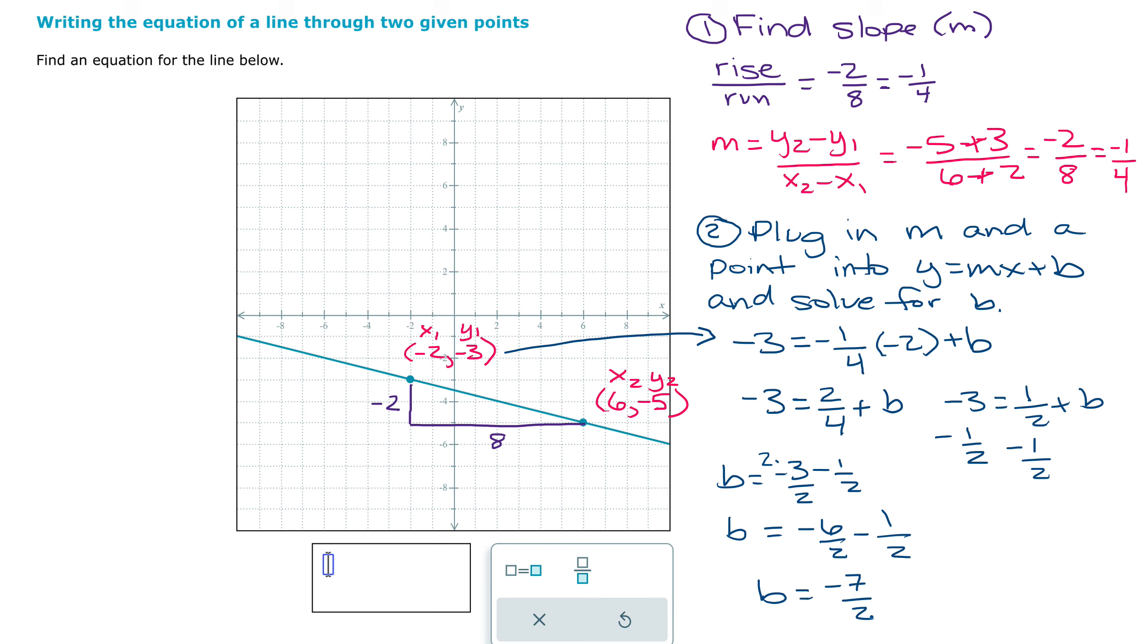Now, I know that negative seven over two is negative three-and-a-half. And I can check on my graph to make sure that that looks like the point where the graph is crossing the y-axis. So I can see it looks like it's about halfway between negative three and negative four. So negative three-and-a-half would make sense.